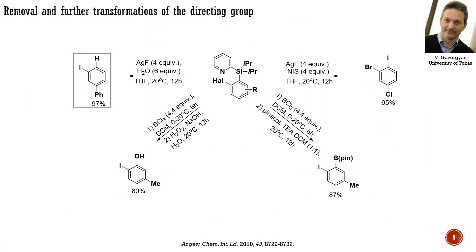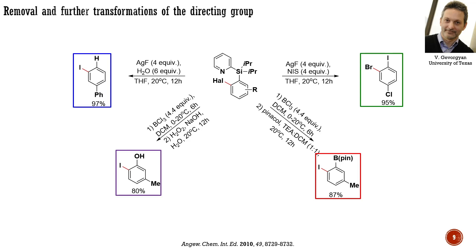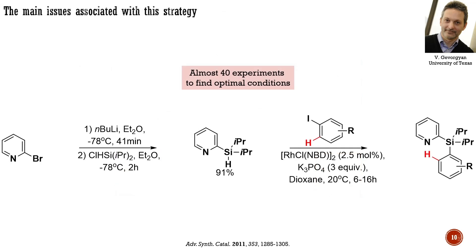They could demonstrate that afterward, the directing group can be easily removed or transferred into other useful functional groups such as halide, ester of boronic acid, and hydroxyl group. In the following reports, they described the introduction of the directing group into the molecules undergoing CH activation. However, it was found that this task is not easy and necessitates the use of expensive reagents; more than 40 experiments were conducted to establish proper conditions. Another limitation arises from the fact that the removable directing group is not stable in the presence of bases, rendering it unsuitable for CH functionalizations requiring the use of fluorides and other strong bases.